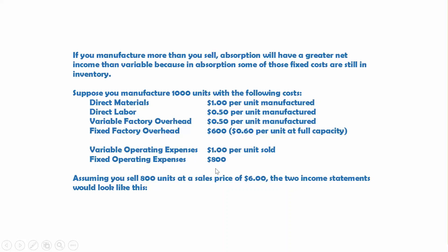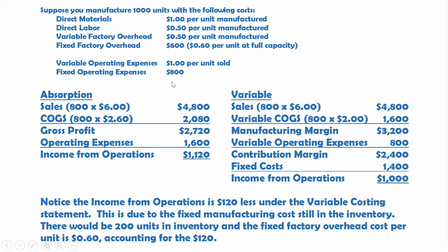Under absorption, we're selling 800 units for $6, giving $4,800 in sales. Our cost of goods sold is $2.60 per unit — $1 for direct materials, $0.50 for direct labor, $0.50 for variable factory overhead, and $0.60 per unit for fixed factory overhead. So 800 units times $2.60 gives cost of goods sold of $2,080, a gross profit of $2,720. Operating expenses are $1,600 — a dollar per unit sold ($800) plus $800 fixed — giving income from operations of $1,120.